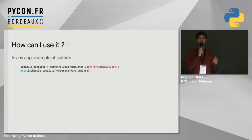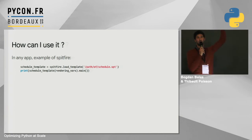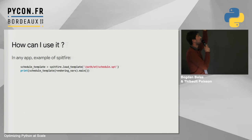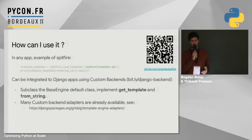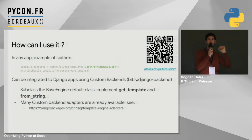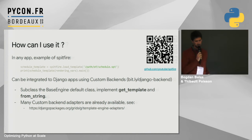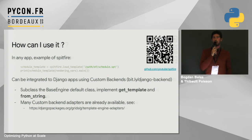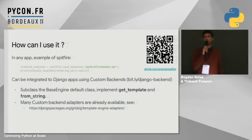To use Spitfire in your projects, you would create a template, save it to a Spitfire file, and then use that file directly in your Python code. You could inline the template, but if you have a large template it's not very convenient to have all that text in Python code. You just pass your rendering variables and get the final result. If you're using Django, you can also use these engines by swapping the default backend with a custom backend. Django asks you to create a subclass of the base engine to implement getTemplate and from_string — two very easy methods to implement. Custom adapters are already available at github.com/youtube/spitfire.